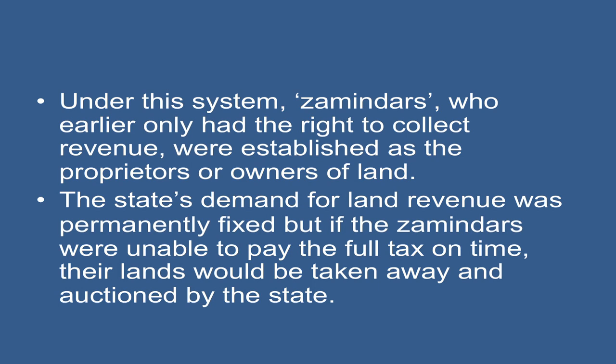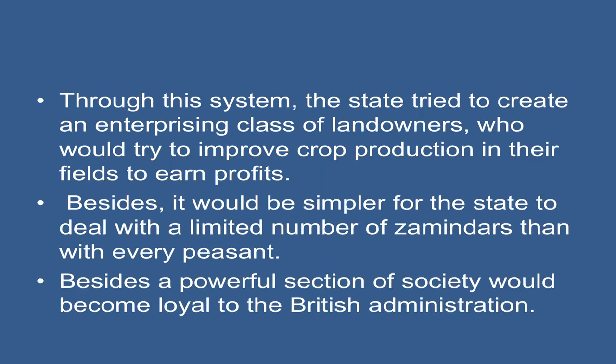To undo this disaster, Cornwallis introduced the system of Permanent Settlement in 1793. Under this system, zamindars who earlier only had the right to collect revenue were established as the proprietors or owners of land. The state's demand for land revenue was permanently fixed, but if the zamindars were unable to pay the full tax on time, the lands would be taken away and auctioned by the state. Through the system, the state tried to create an enterprising class of landowners who would try to improve crop production in their fields to earn profits.